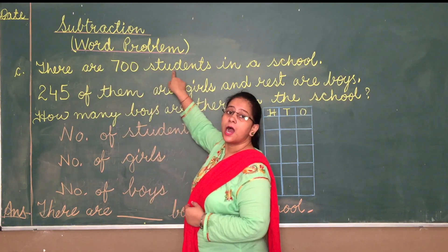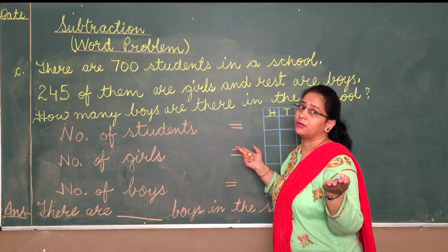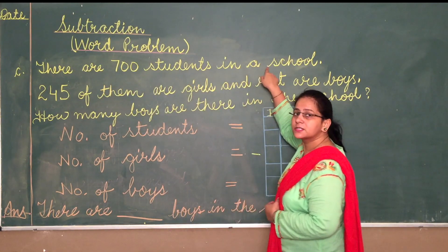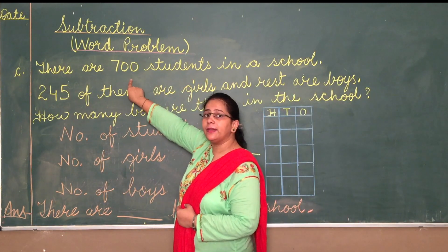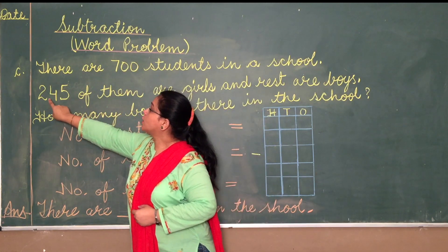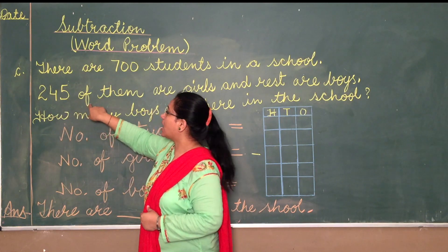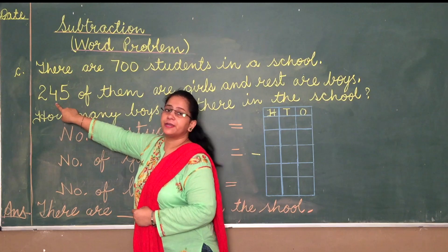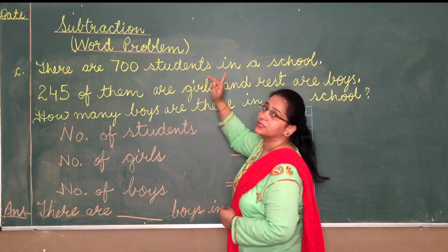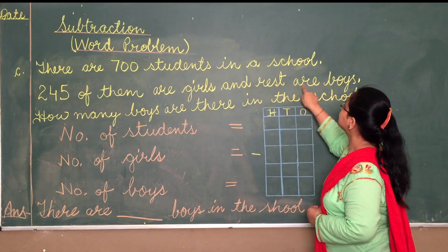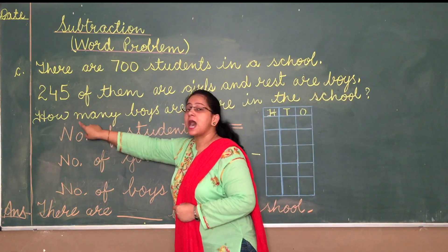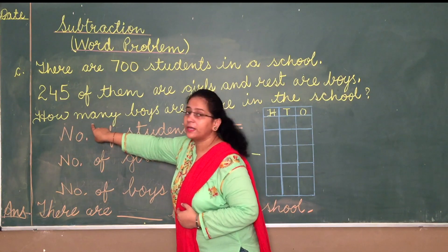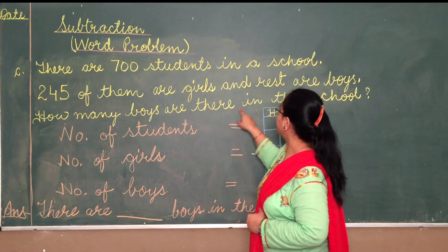There are 700 students in a school — like your school, St. Paul's School. There are 700 students. The second line says 245 out of them are girls. The third line says the rest are boys. When it says 'how many boys are there in the school?' — again, 'how many' means you have to subtract.